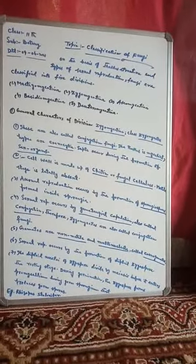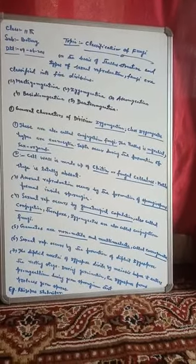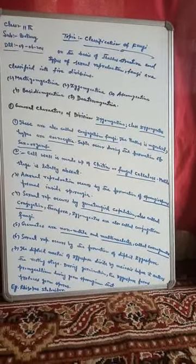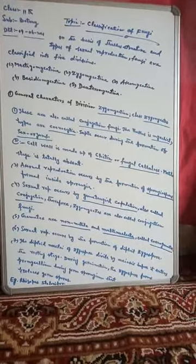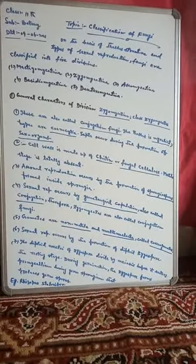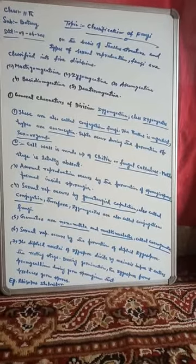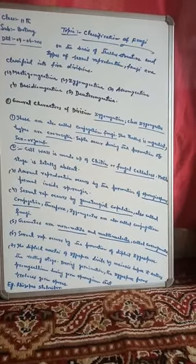The second character of Zygomycotina is that the cell wall is made of chitin — C-H-I-T-I-N — also called fungal cellulose. So the cell wall is made of chitin or fungal cellulose.